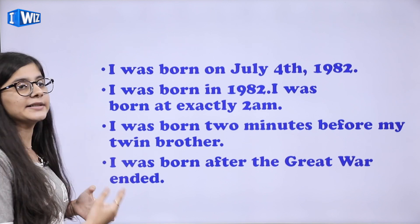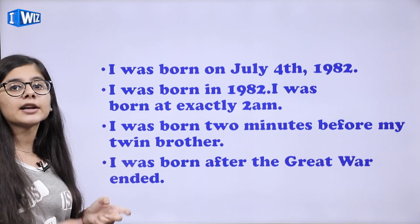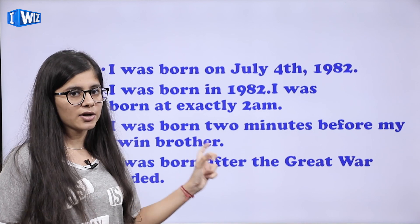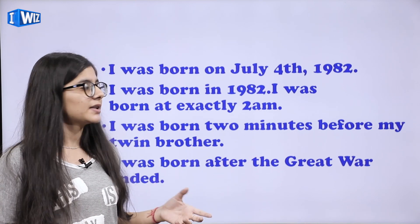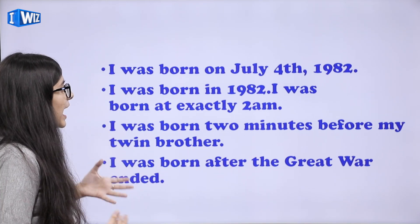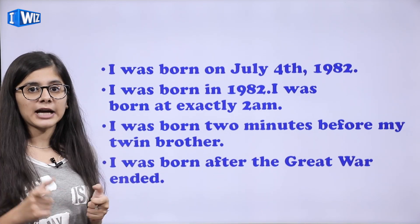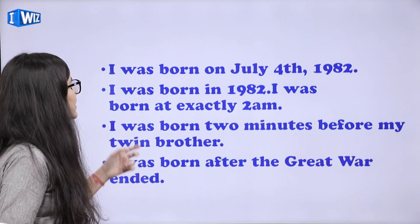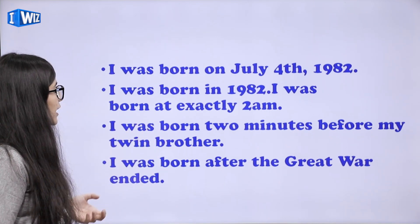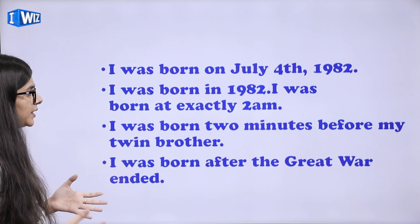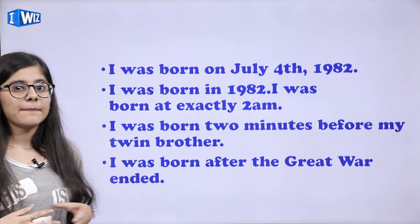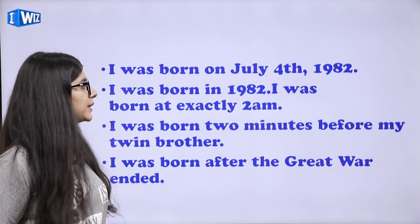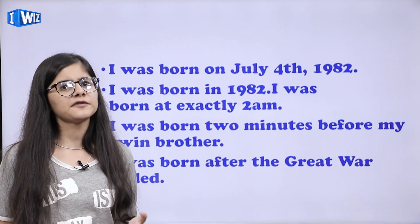I was born in 1982. Agar hum year bata rahe hain, toh hum log kya use karenge — 'in'. Date bata rahe hain — 'on'; year bata rahe hain — 'in'. I was born at exactly 2 am. Ab hum time bata rahe hain, specifically 2 baje mein paida hua tha, toh kya use karenge — 'at'. I was born 2 minutes before my twin brother. Apne twin brother se 2 minute pehle hua tha, toh hum kya use karenge — 'before'. That is a preposition of time.